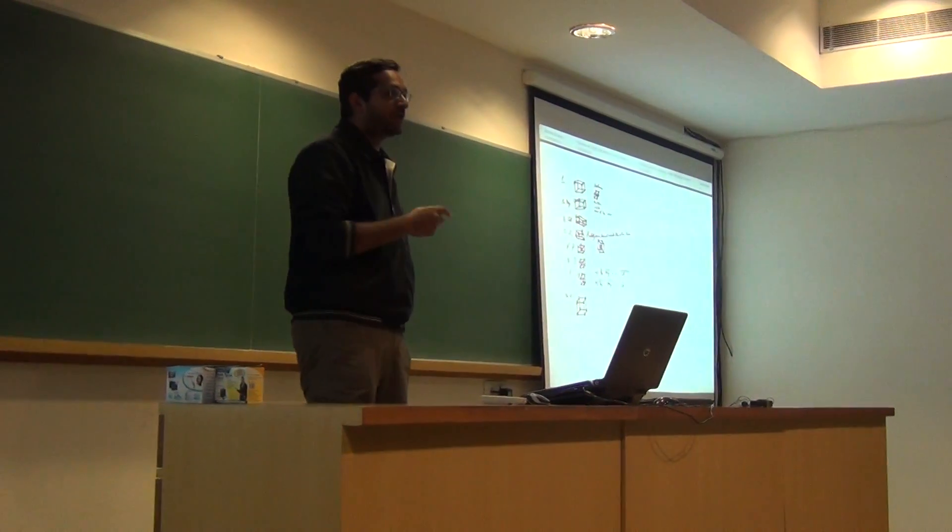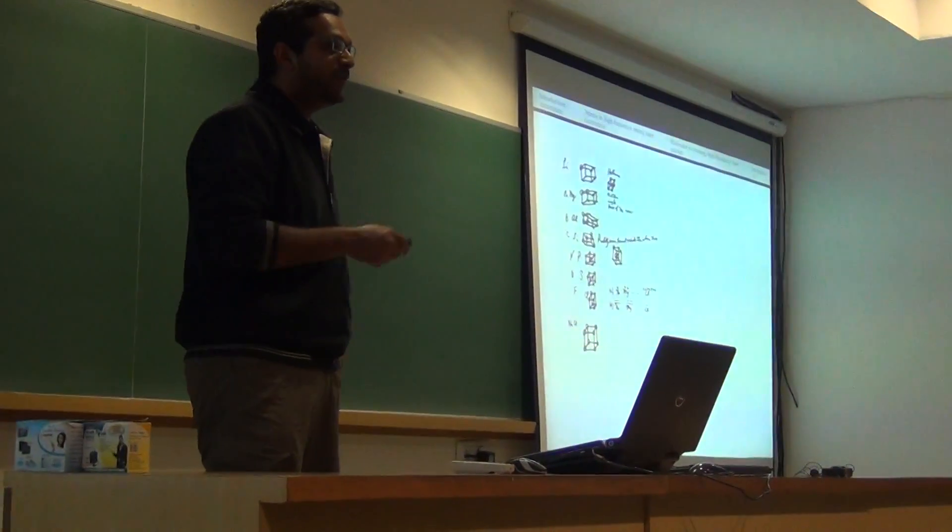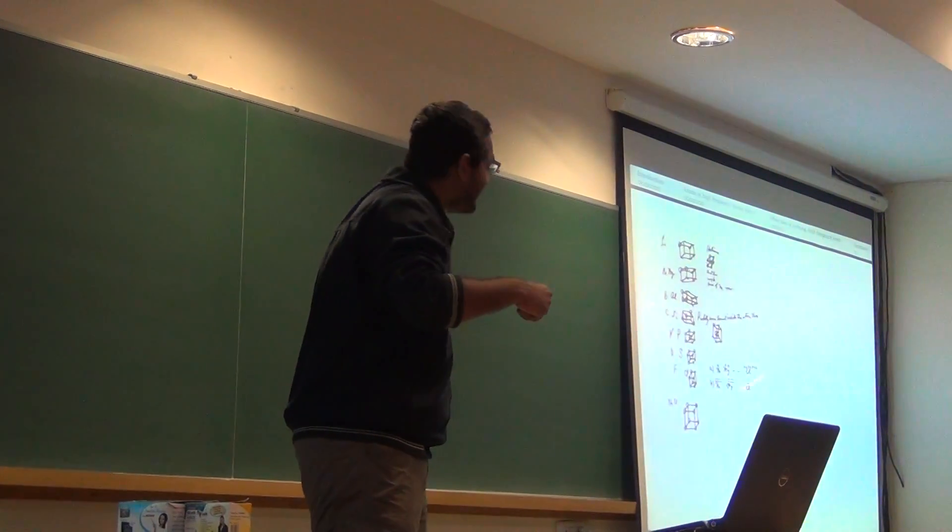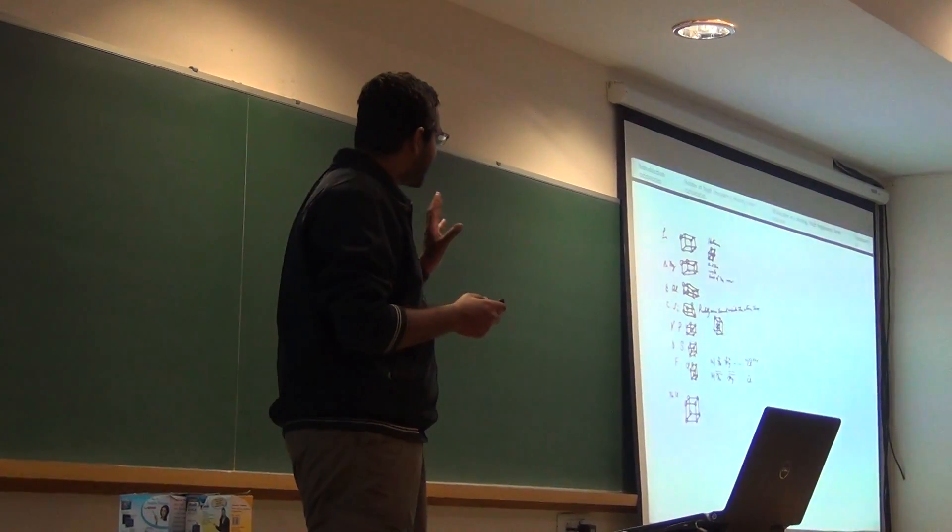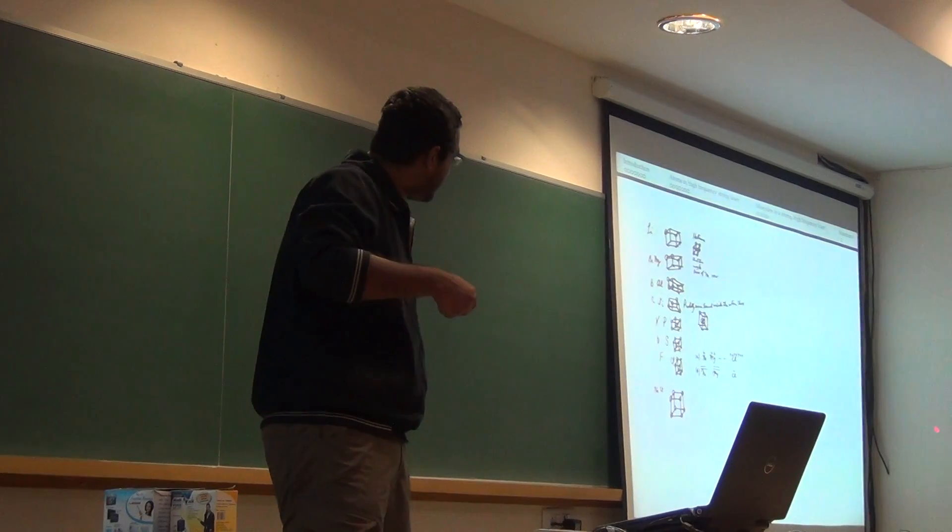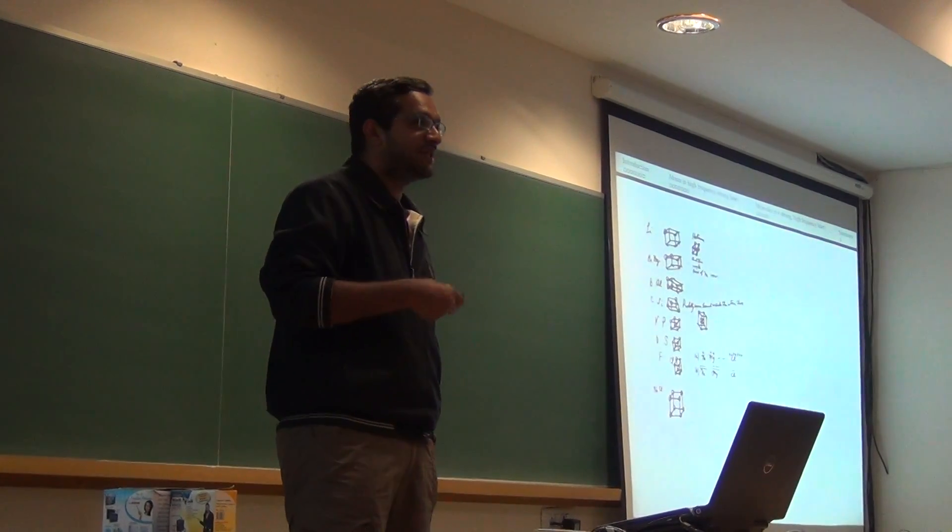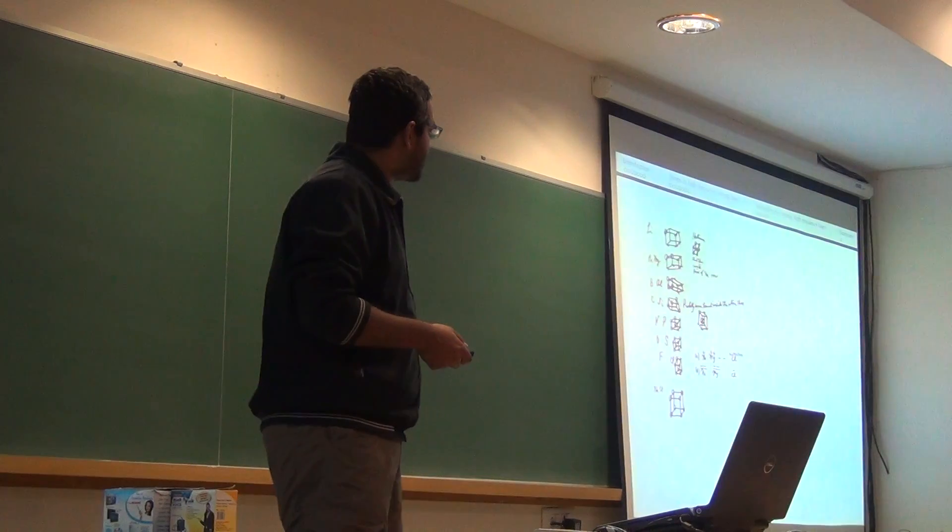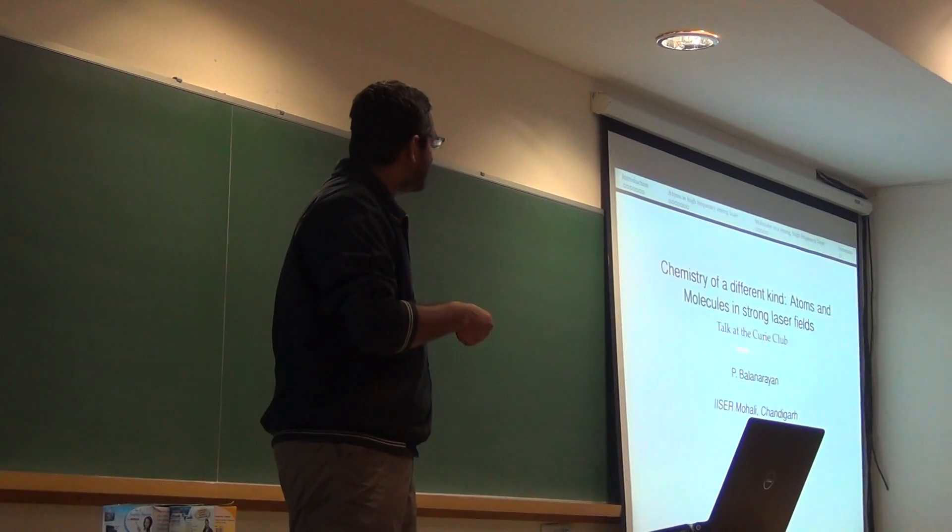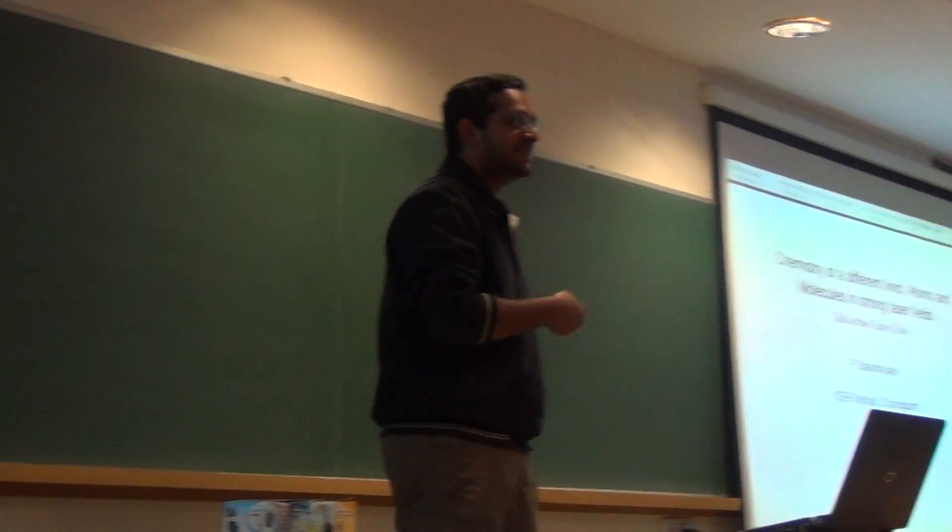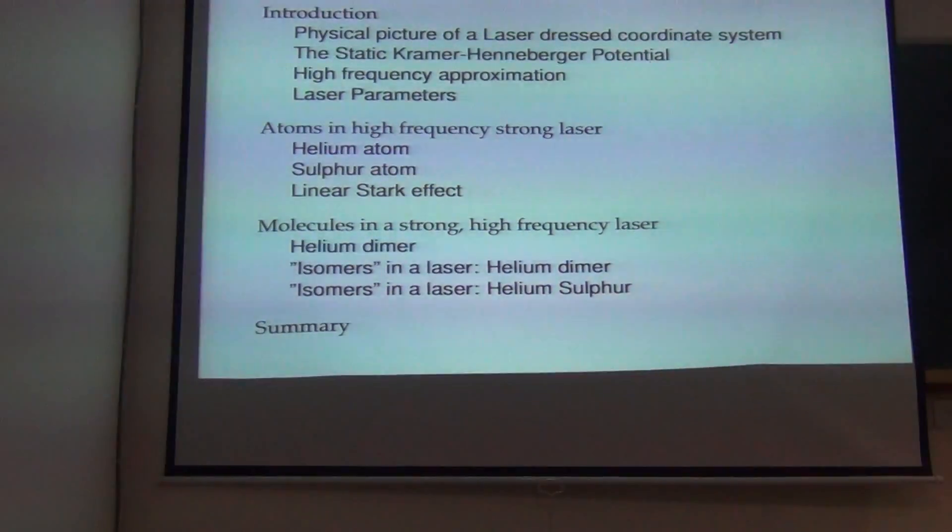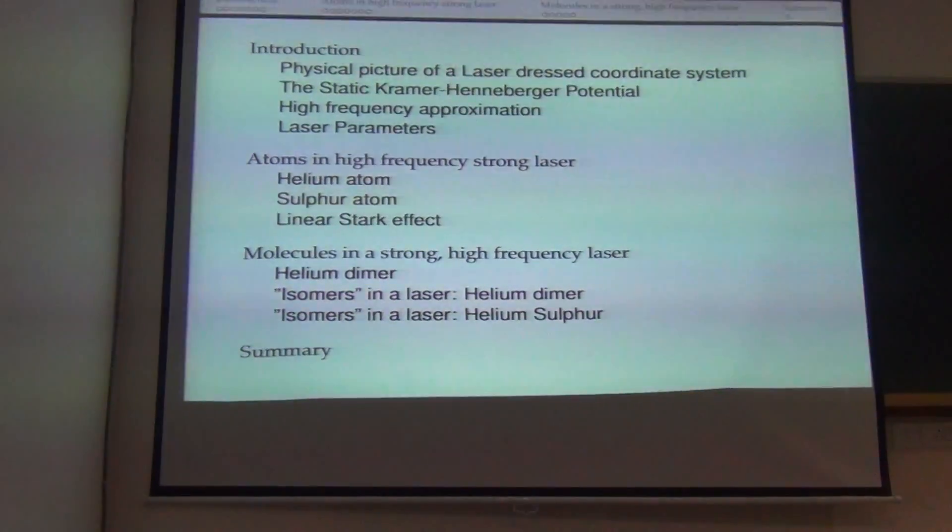So today, in today's talk, what we would be doing is we would be doing something similar. We would try to relate, not exactly this kind of an electronic structure, but the actual electronic structure of atoms and a laser, which is a lot of number of photons, a very high intensity, high frequency laser. So the title of today's talk is Chemistry of a Different Time, Atoms and Molecules in Strong Intense Laser Fields. So the plan of the talk is as follows. And basically we will try to answer three questions.